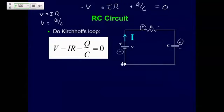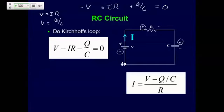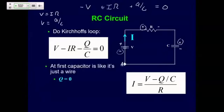We can solve this equation for the current I. If I'm charging up the capacitor, what is the charge Q on the capacitor when we start? It'll be zero. So initially at time zero, this equation will look like I equals V over R, which is just Ohm's law.